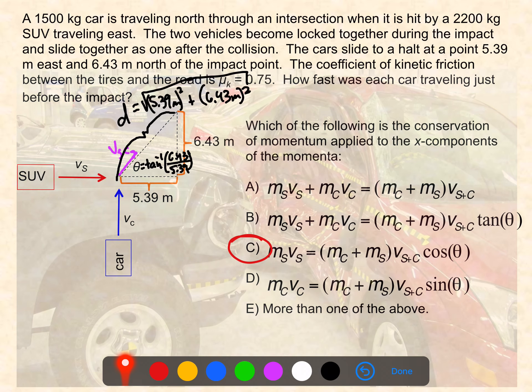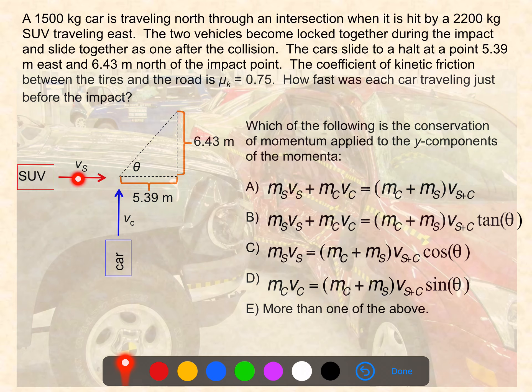Let's take a look now at the y direction. In the y direction, we're going to take a similar approach. This time, it's only the car that has initial velocity in the y direction. The SUV is completely in the x direction, so it's not going to impact the initial momentum in the y direction. Then, in the final state, the combined mass has a component in the y direction which is going to be related to the sine of this angle. All of those factors come together in choice D where we have the momentum of the car in the initial state equal to the combined mass times the combined velocity times sine of theta.